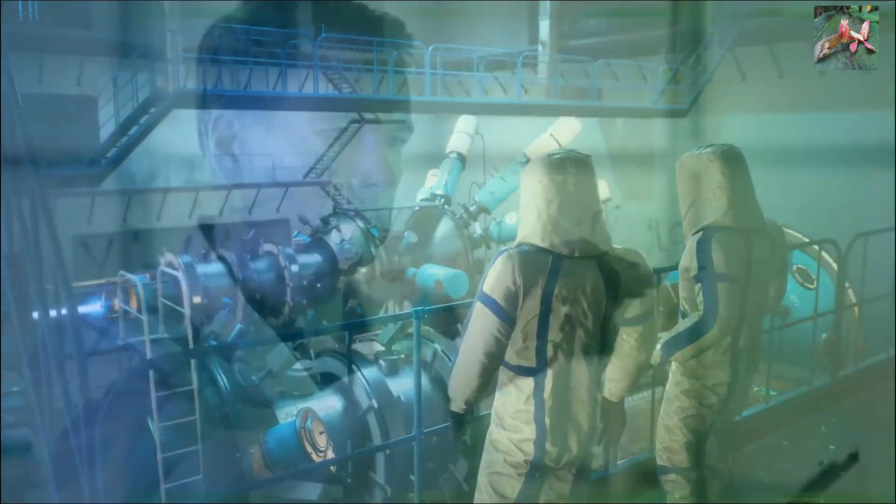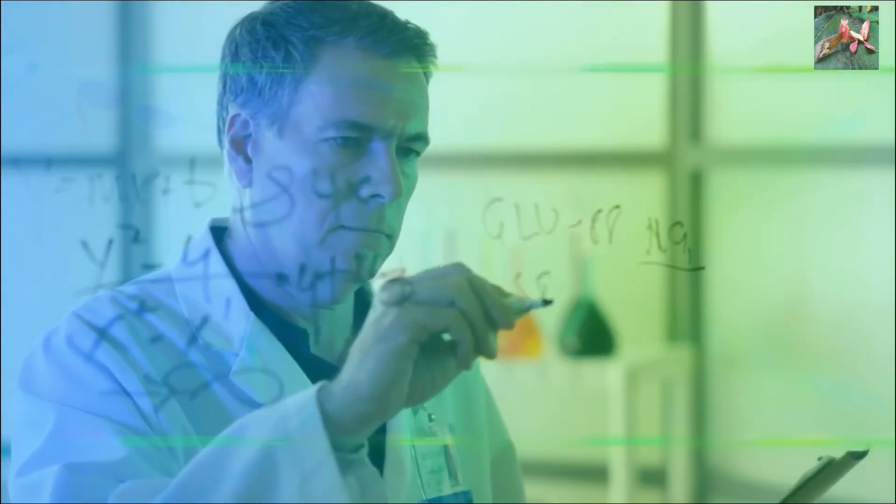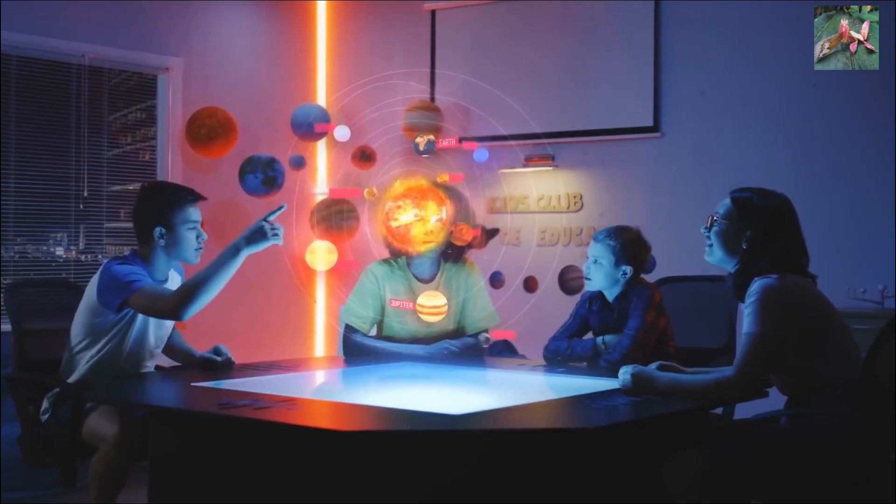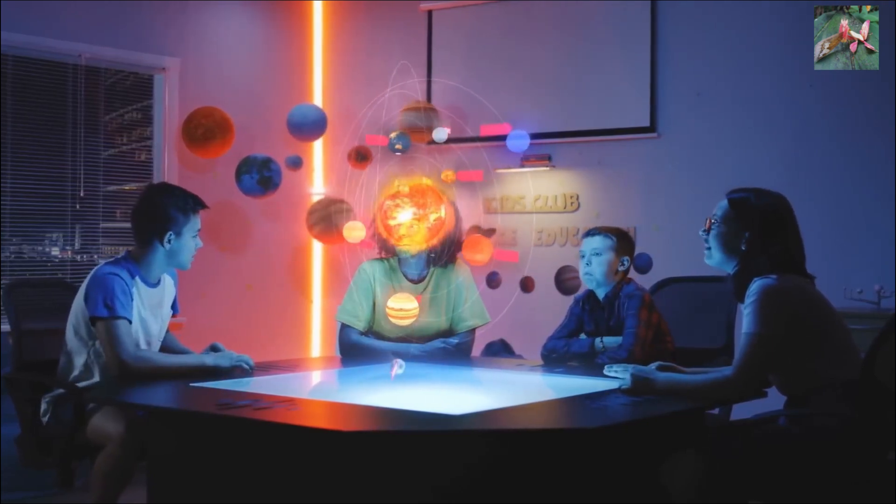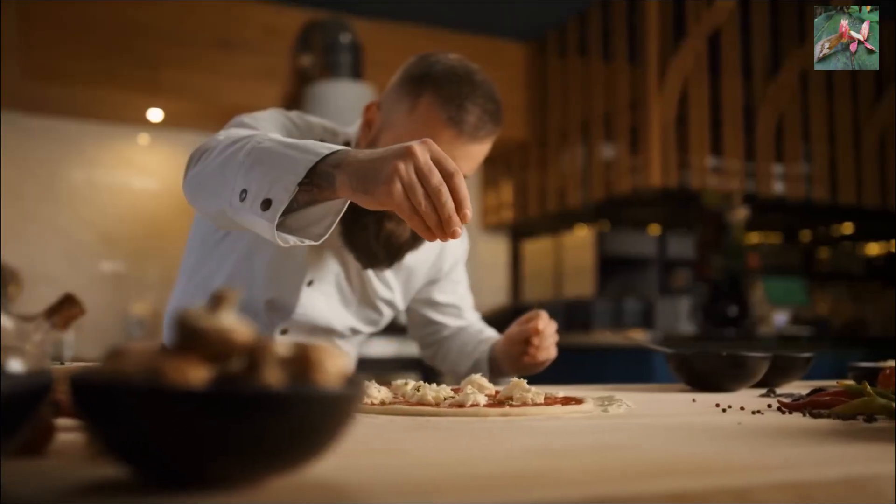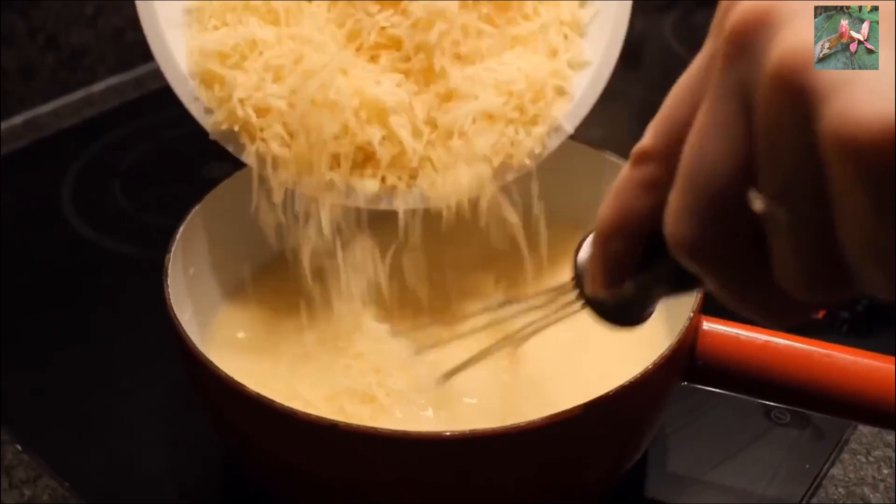But why do we even need to do that? Well, studying the quark-gluon plasma helps us understand how the universe evolved and what happened in its earliest moments. To understand the recipe of the entire pizza, we need to know all ingredients, right? Including the melted cheese.